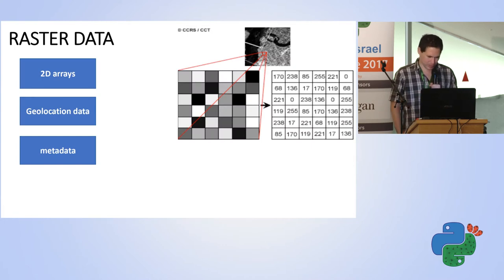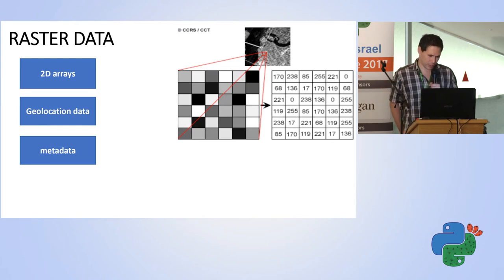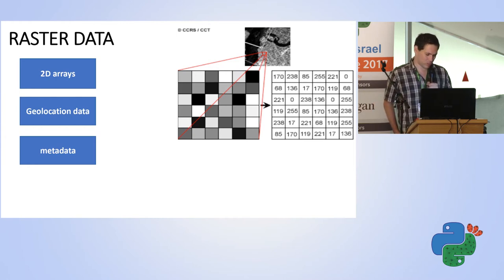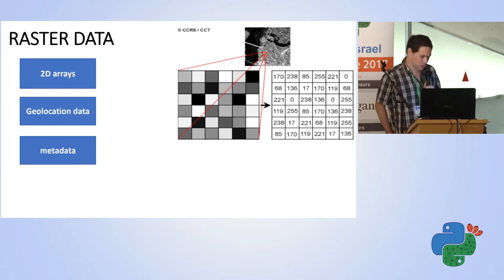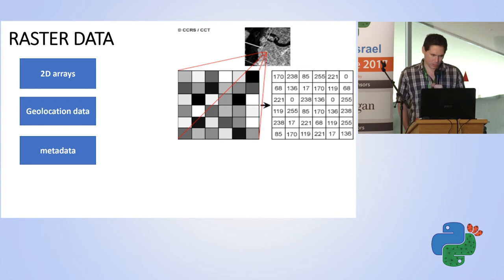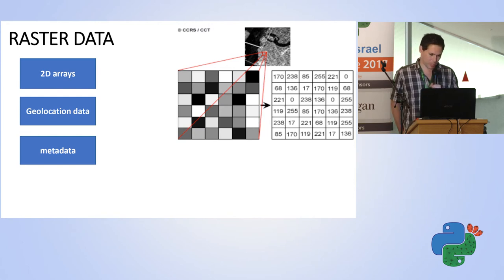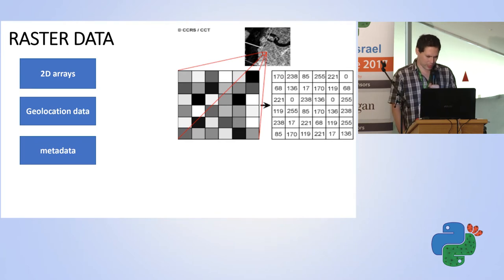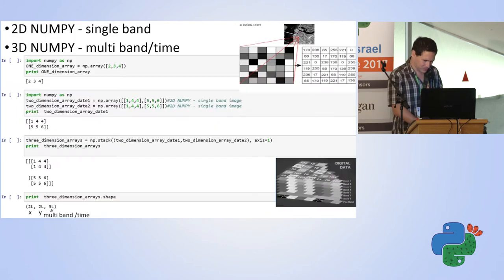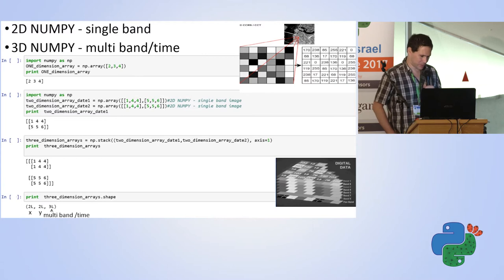Satellite data is basically a 2D raster array. What is unique about it is that it contains geolocation data telling us where in the world the data is located. It also has metadata that describes other properties like the coordinate system, the date it was taken, and many more attributes depending on how the data is packaged.